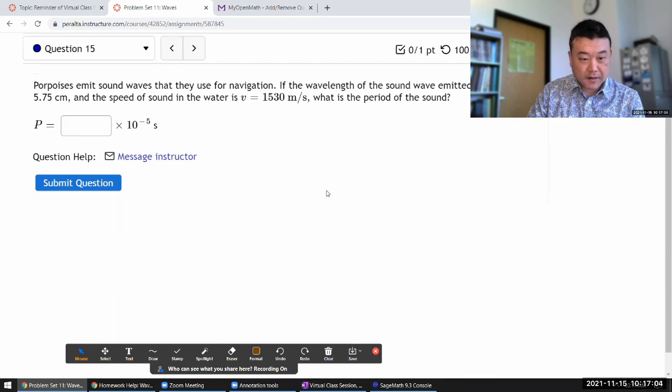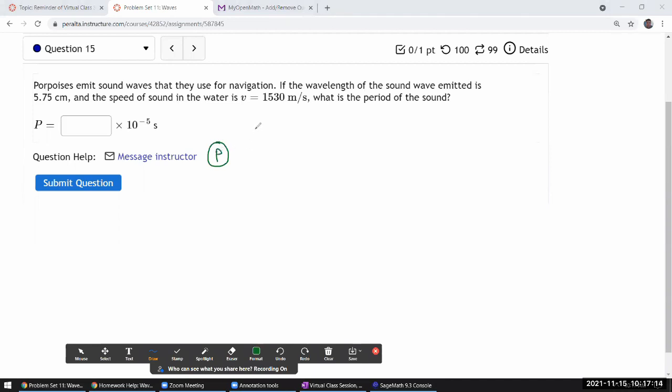They emit sound waves that they use for navigation. So we have something here. I'm going to represent my porpoises with this circle with the letter P inside. It's emitting some sound waves that use for navigation. The wavelength of the sound wave emitted is this length. Okay. 5.75 centimeter. And the speed of sound in water is 1530 m/s. What is the period of the sound?